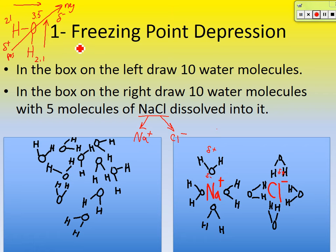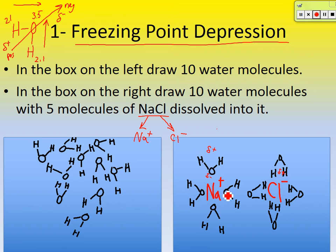Why does this lower the freezing point of water? Think of it this way: in a liquid, molecules are sliding past each other. In order to freeze, they have to get closer together. The salt holds these water molecules farther apart. Can they get close enough to freeze when they're being held apart like that? No — they're kept farther apart, so they can't get close enough to freeze. By putting salt on the road, it separates those water molecules and won't let them freeze.